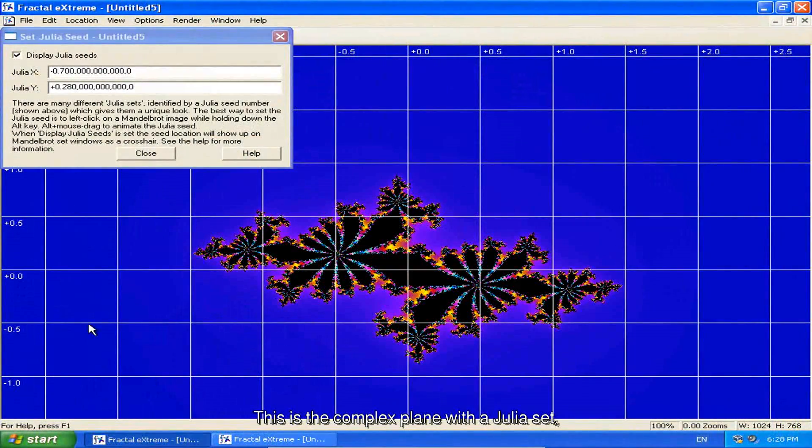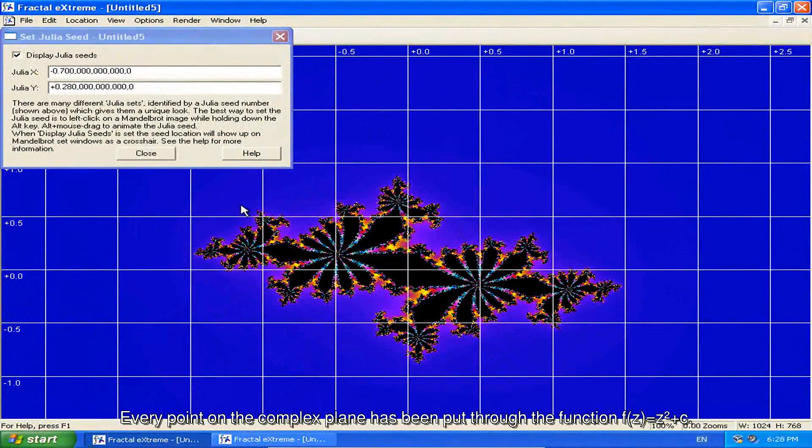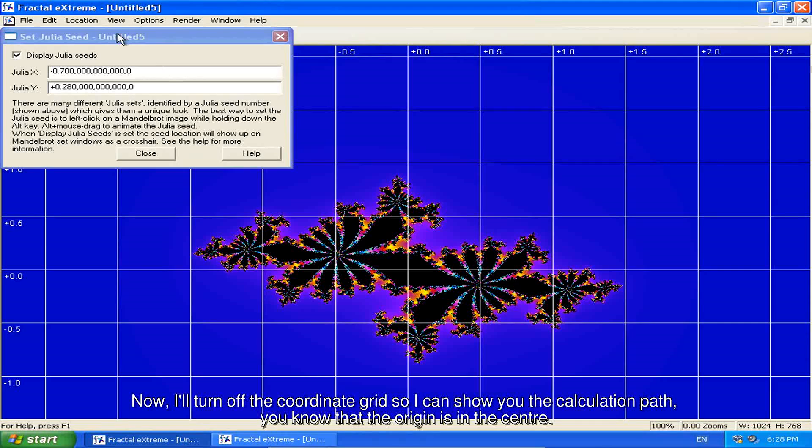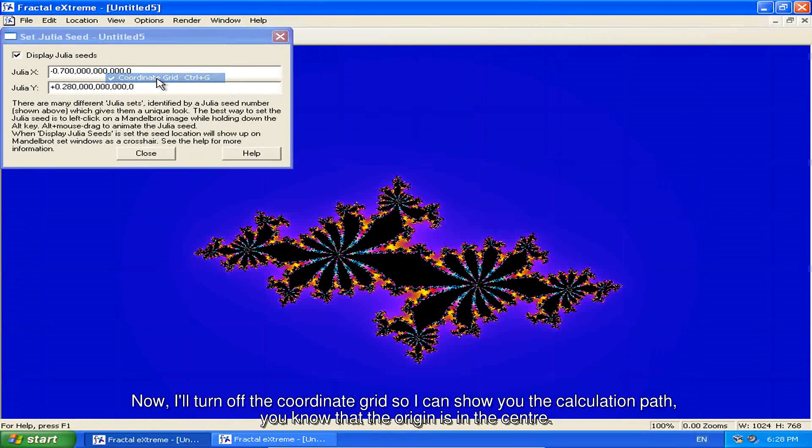This is the complex plane with a Julia set. Every point on the complex plane has been put through the function f of z is equal to z squared plus c. And the c value for this Julia set is minus 0.7 plus 0.28i. Now I'll turn off the coordinate grid so I can show you the calculation path. You know that the origin is in the center.